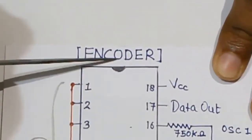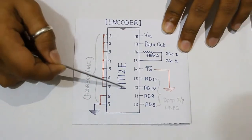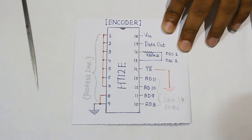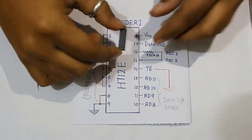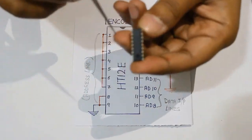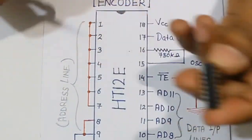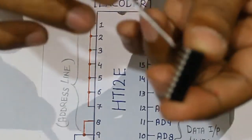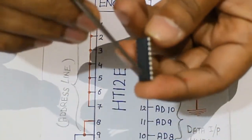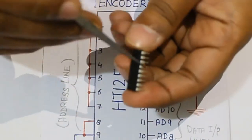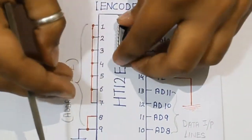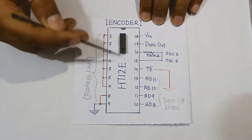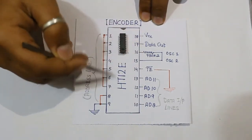The IC which I am using is encoder, that is HT12E IC. Here you can see this is the IC which I am using. The notch you can see here is the notch, same thing here also. This is our left side and this is our right side of the IC.